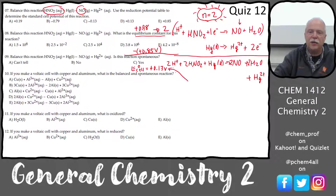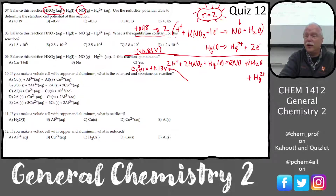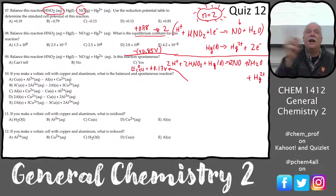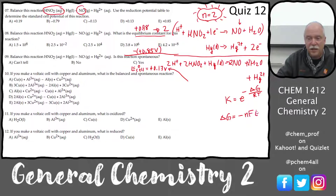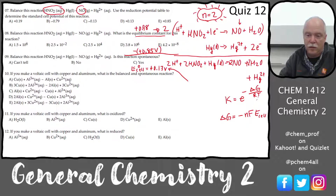How is that related to the equilibrium constant? We have to go through delta G. If I know the delta G of the reaction, I can get the equilibrium constant, because K = e^(−ΔG/RT). And delta G equals −nFE°cell. That 2 (the number of electrons) is important now.